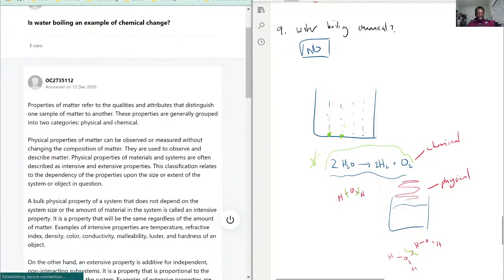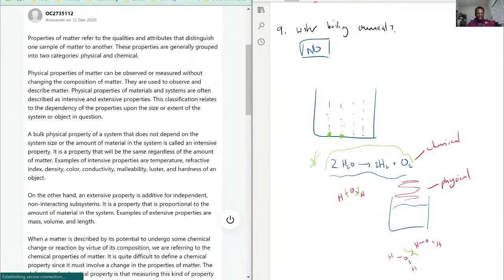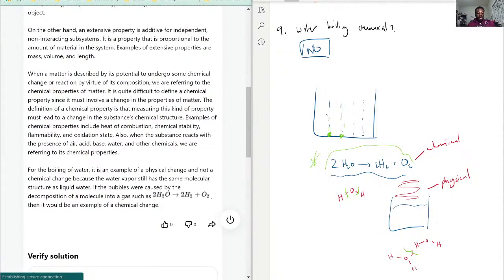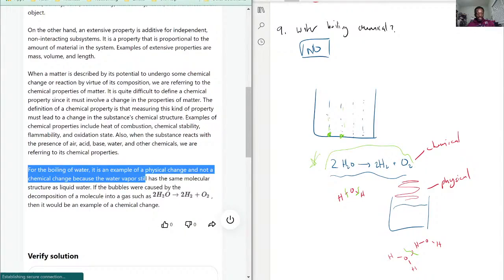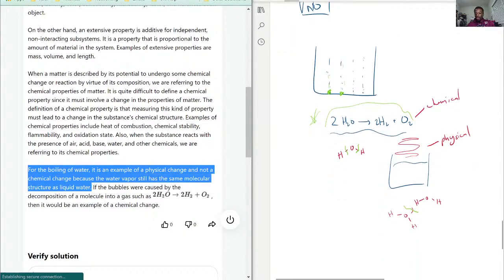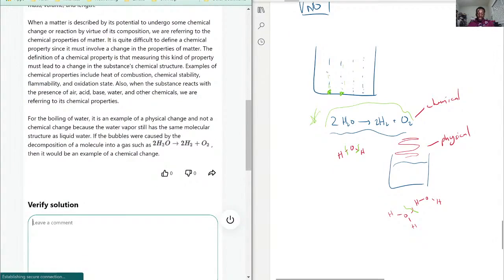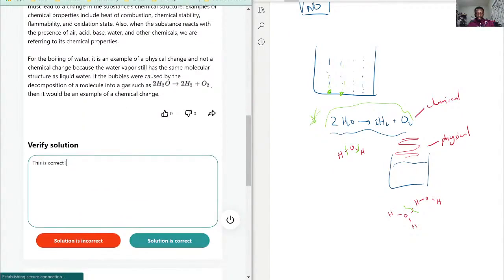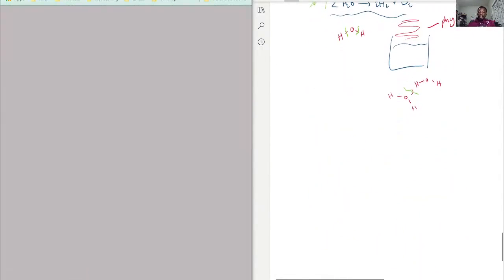So with that being said, let's see how we did. They do mention that here the bubbles were caused by decomposition of molecules into gas—this is what we have here: 2H2 plus O2. That would be an example of a chemical change. But the boiling water itself is an example of physical change because the water vapor still has a molecular structure as physical water, well as liquid water. So this is correct. On to question number 10.